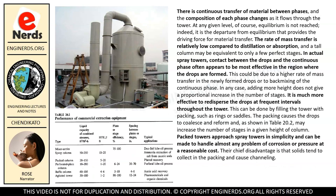There is continuous transfer of material between phases, and the composition of each phase changes as it flows through the tower. At any given level, equilibrium is not reached — indeed, it is the departure from equilibrium that provides the driving force for material transfer. The rate of mass transfer is relatively low compared to distillation or absorption, and a tall column may be equivalent to only a few perfect stages. In actual spray towers, contact between drops and the continuous phase often appears to be most effective in the region where the drops are formed. This could be due to a higher rate of mass transfer in newly formed drops or to back mixing of the continuous phase. In any case, adding more height does not give a proportional increase in the number of stages.